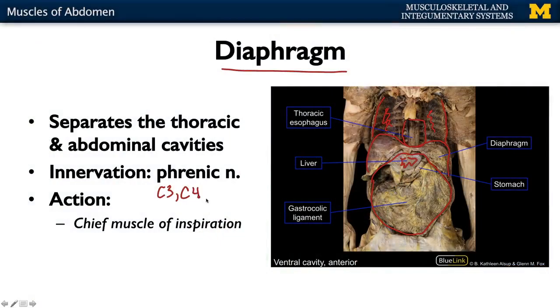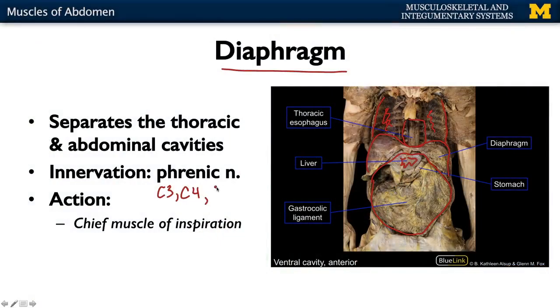The diaphragm is innervated by your phrenic nerve. If you've ever heard 'C3, 4, and 5 keep the diaphragm alive' — spinal nerves C3, 4, and 5 come together to innervate the diaphragm, traveling down — you can see them a little bit right here — to the diaphragm.